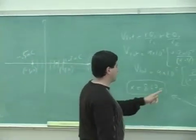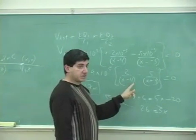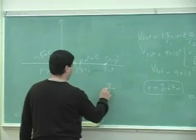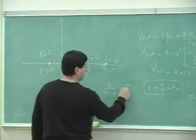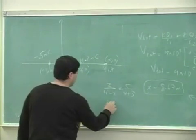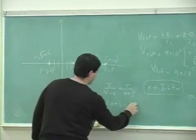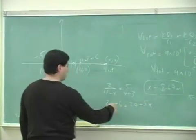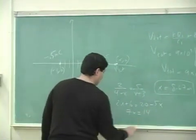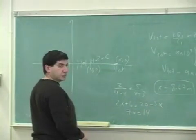So to get the other answer, I'm going to do 2 over 4 minus x equals 5 over x plus 3. And then you can multiply: 2x plus 6 equals 20 minus 5x, and you get 7x equals 14, and x equals 2.